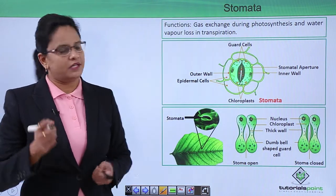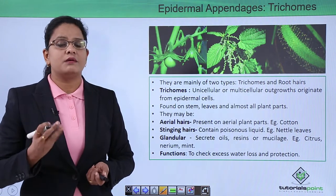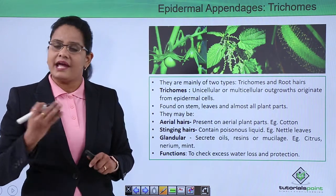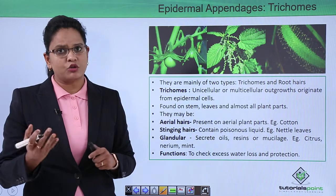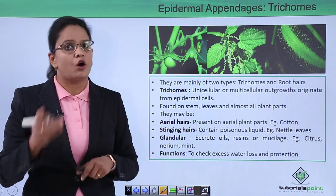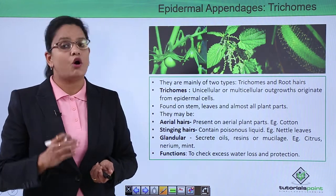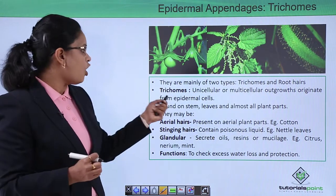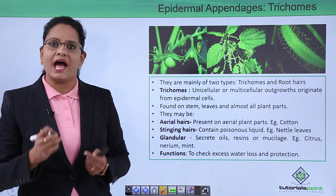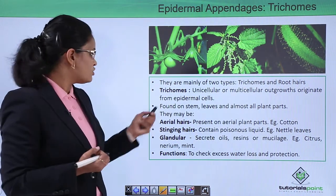The next component is epidermal appendages, which include trichomes and hair. Epidermal appendages are extra outgrowths — just as hair on our skin helps in protection and sweating, trichomes perform similar functions for plants. Trichomes are unicellular or multicellular hair outgrowths present on all plant parts — leaf, stem — and rarely on roots. Roots have specialized hair called root hair.